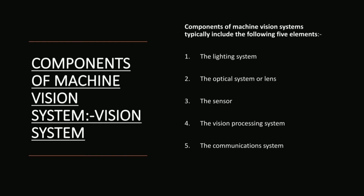Components of a machine vision system typically include five elements: the lighting system, the optical system or lens, the sensor, the vision processing system, and the communications system.